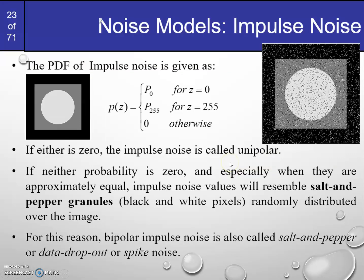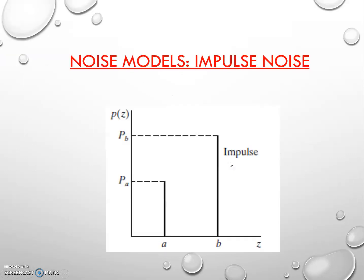When we talk about impulse noise, by default we mean bipolar — both white and black spots are present. In the graph, you can see spikes at intensity a and intensity b, appearing abruptly.